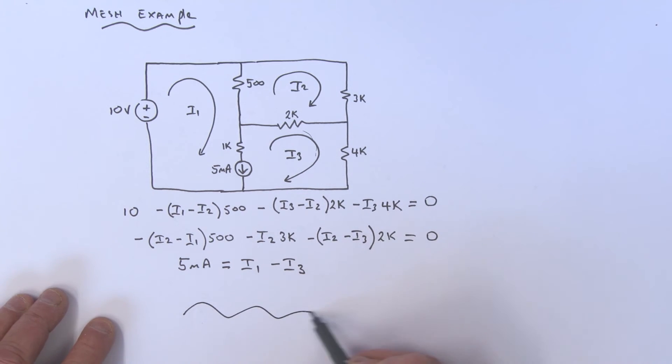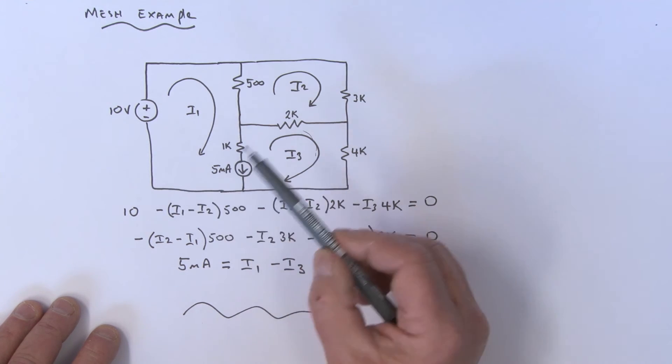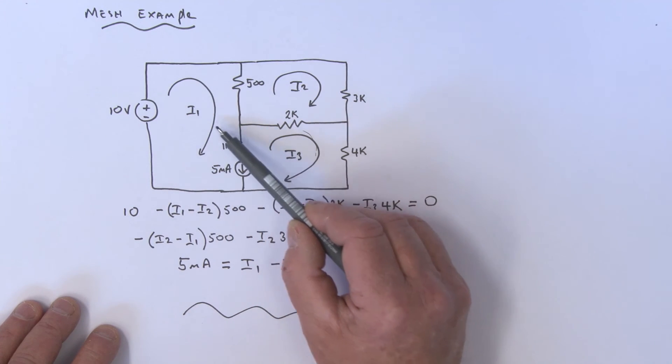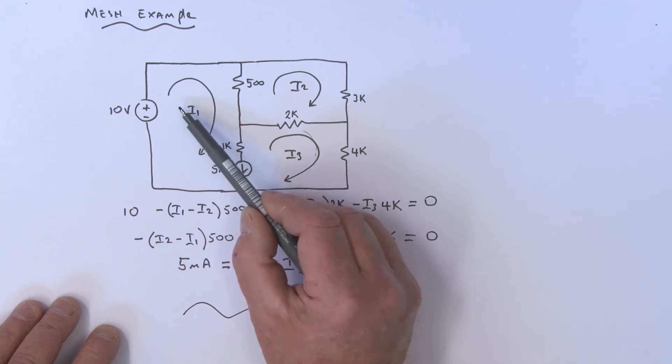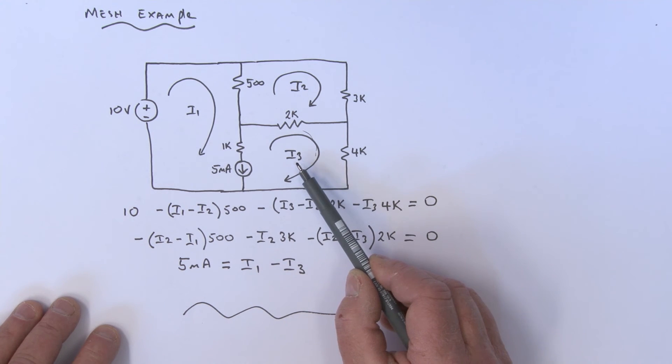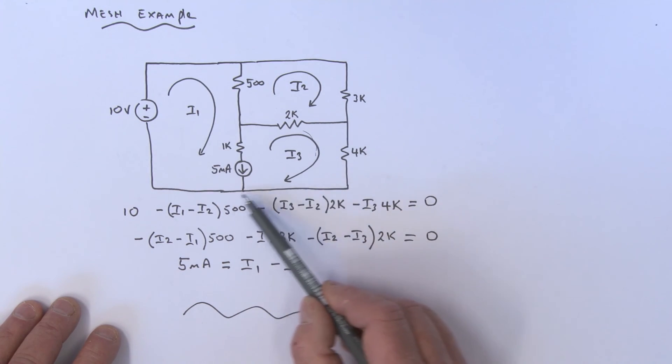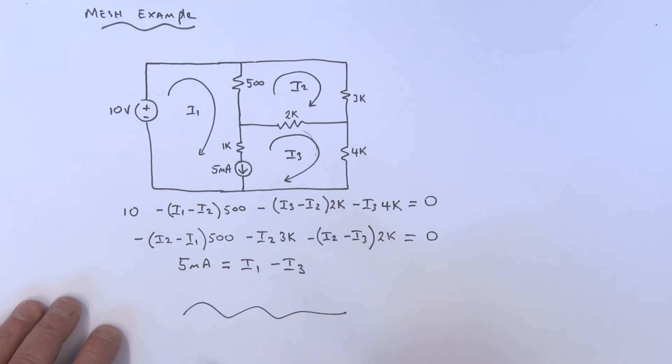We now have enough information to solve for I1, I2, and I3. This problem seemed more complicated because of the current source, but it really wasn't. It just involved combining two mesh currents—I3 and I1—to sum voltages around a loop. That's how we solve that problem.